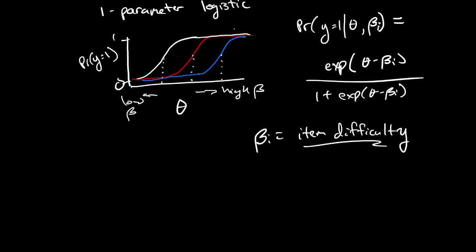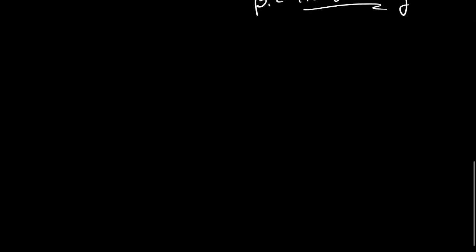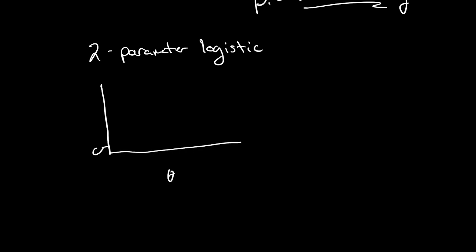One of the extensions of the one parameter is what is called the two parameter logistic. Here we have a very similar shape as before. An item might actually look very identical as in the one parameter case, but there might actually be items that have a slightly different shape.